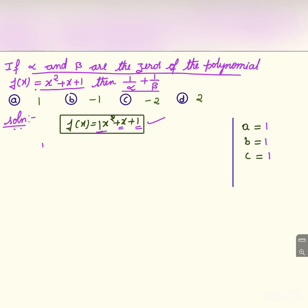We have to find 1/α + 1/β. The LCM of this is α×β, and we will get β + α, which can be written as (α + β)/(αβ).